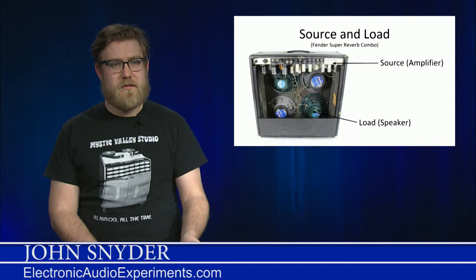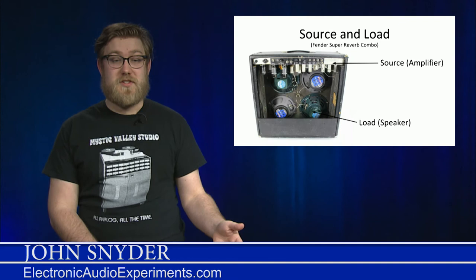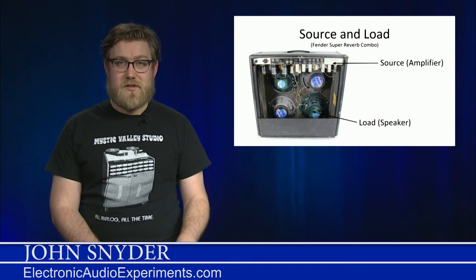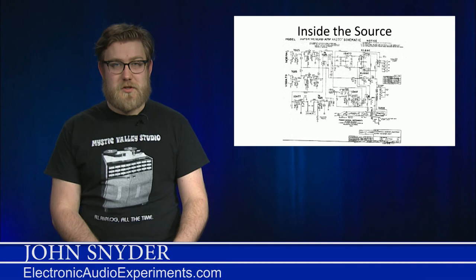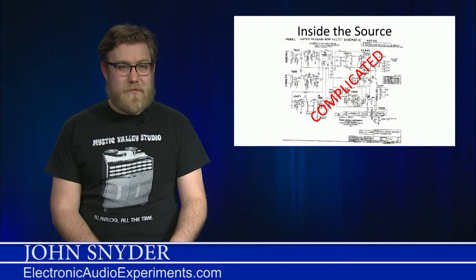Here we have a Fender super reverb combo. We have a source, which is an amplifier, and we have a load, which is a speaker. The source can be modeled as a voltage source, and the load can be modeled as resistance. Inside the source, we've got a whole lot going on. We have tubes, transformers, resistors, capacitors. Analyzing a tube amp can take days to do properly. Needless to say, it's pretty complicated. But we can model it in this way.